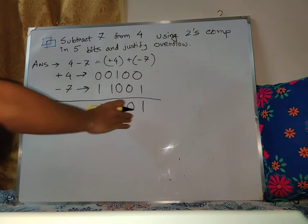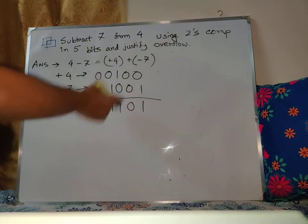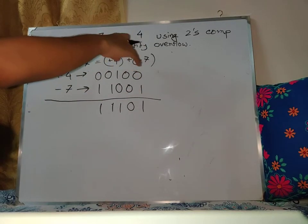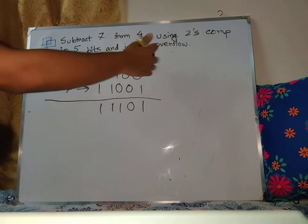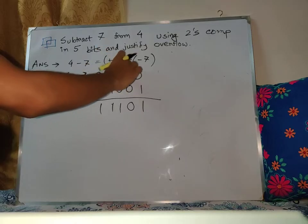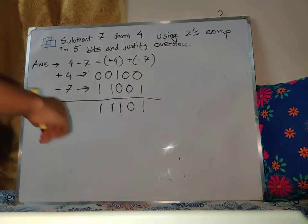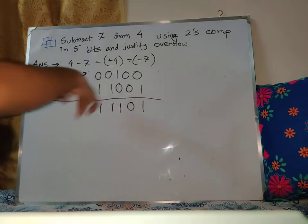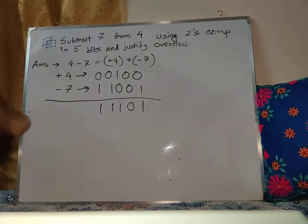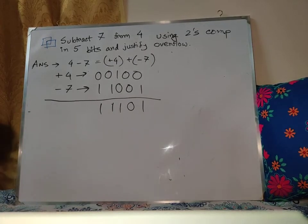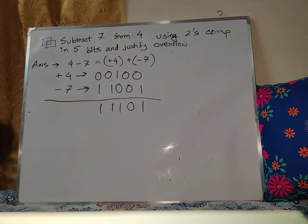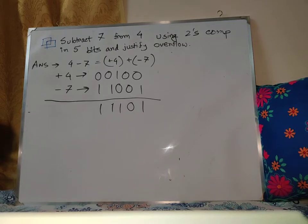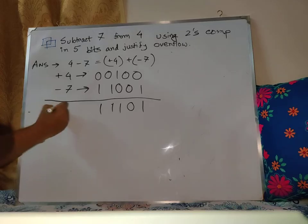Yeah, after adding we get 11101, that's the final result. So basically if we normally think about it in decimal, the result should be plus 4 plus minus 7, so basically minus 3 should come. So let's verify whether the binary number we got is actually equivalent to minus 3. We need to verify this. We don't directly know what minus 3's binary is, but we know plus 3's binary and we know how to get minus 3's binary.